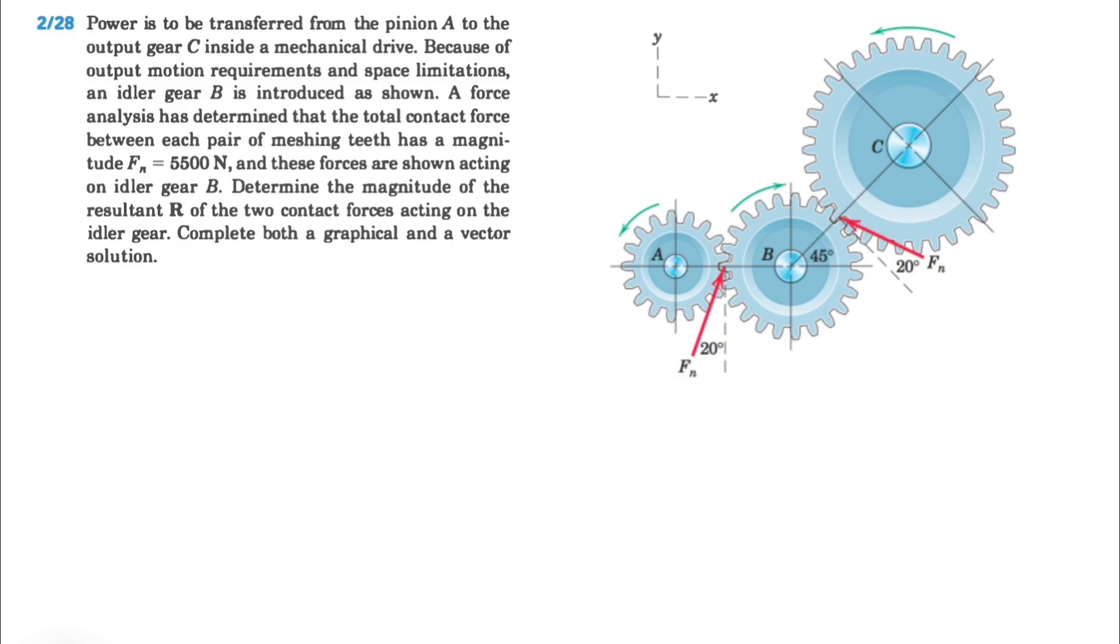Basically all we need to do in here is to find the resultant of these two forces. So the gear is turning counterclockwise which makes the gear B rotate clockwise, and at the end we'll have the gear C rotating counterclockwise. What we care in here is the resultant of these two forces.